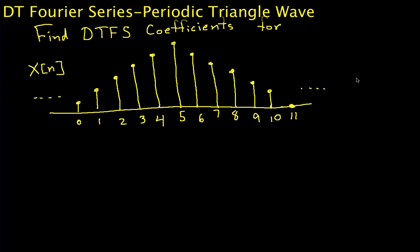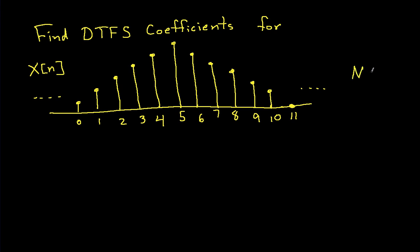It's periodic, with period n equals 12, and our goal is to find the discrete time Fourier series coefficients for it. Now, in and of itself, this is an interesting triangle wave, but it probably doesn't justify its own video.